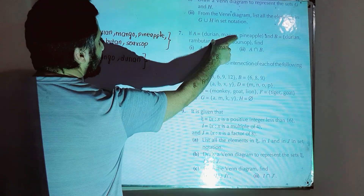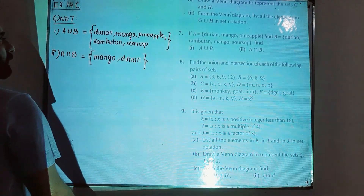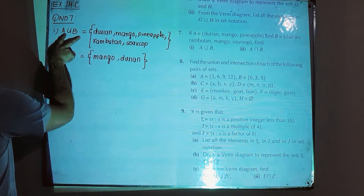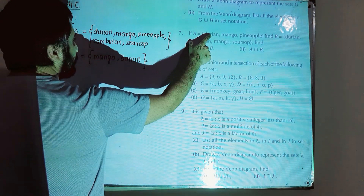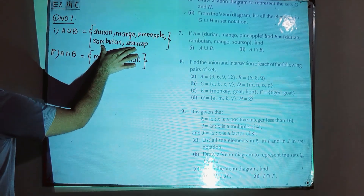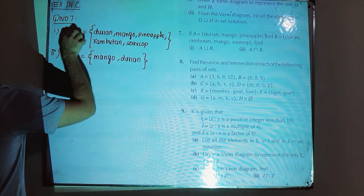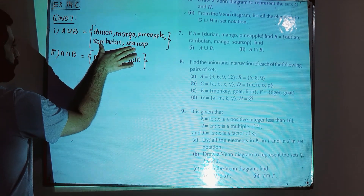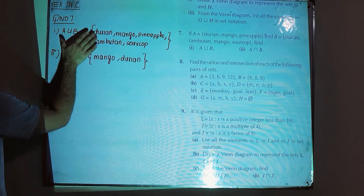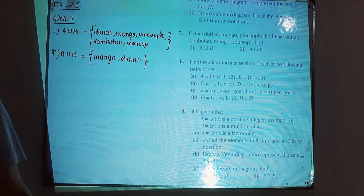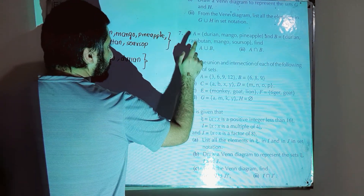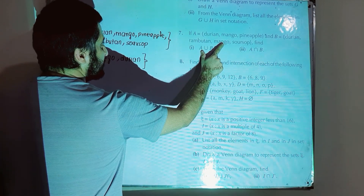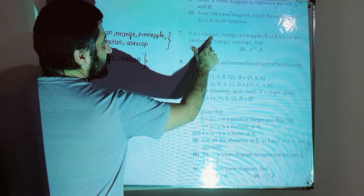Question number 7: set A contains durian, mango, and pineapple; set B contains durian, rambutan, mango, and soursop. A union B means writing all elements of A and B in a single set without repeating any element. For A intersection B, the common elements are mango and durian — present in both A and B.